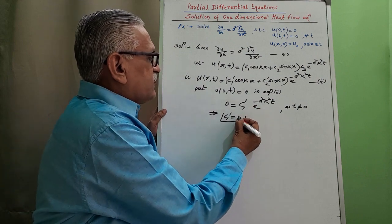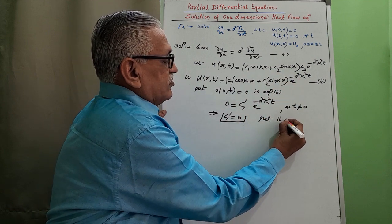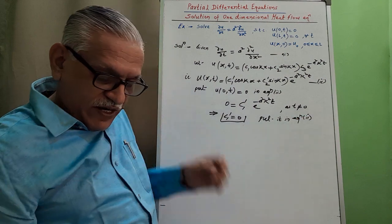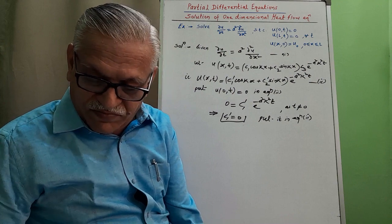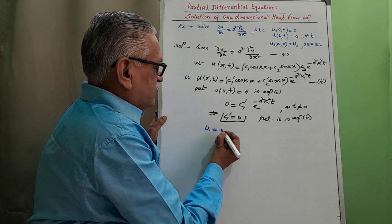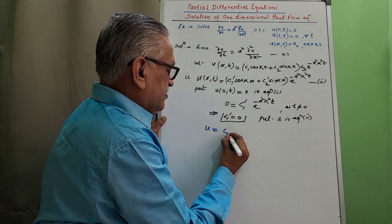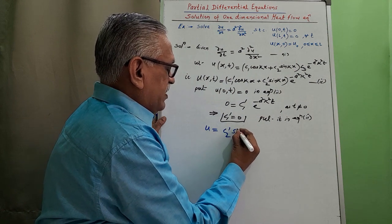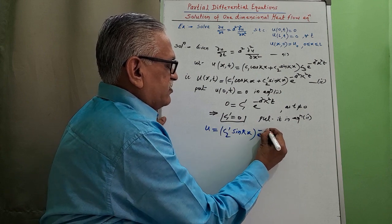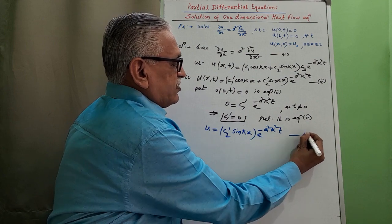Substituting c₁' = 0 into equation 2, the first term becomes zero, and we get u = c₂'sin(kx) · e^(−a²k²t). We call this equation 3.